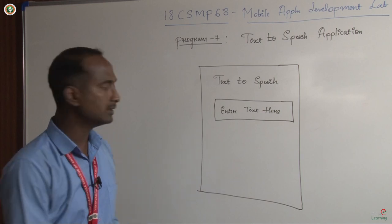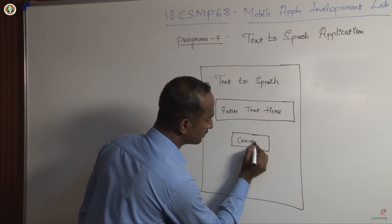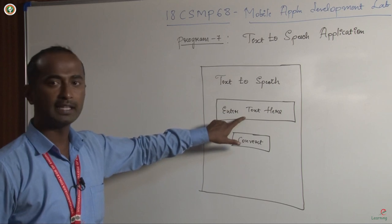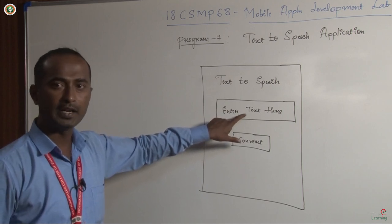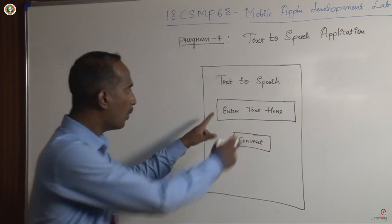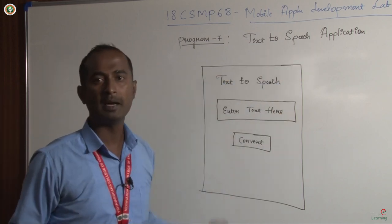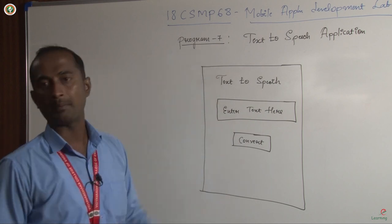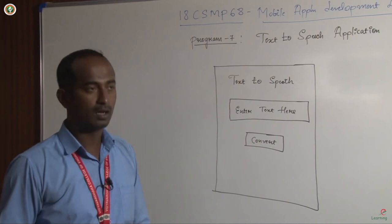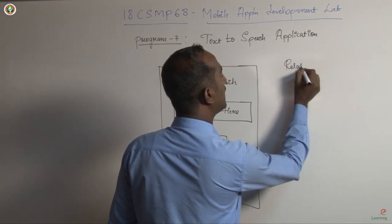You must enter the text here, and I am going to use a button named 'Convert.' So the design is: a title, a plain text inside which the user enters the text, and a button named Convert. Whenever you click Convert, whatever text you have entered will be converted to speech. This is my application design for program number seven. Let's list out the components required as well as the layout. Since we have only three components, we will go with the relative layout.